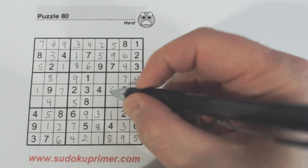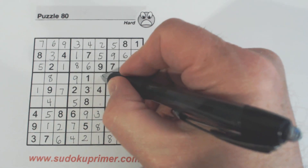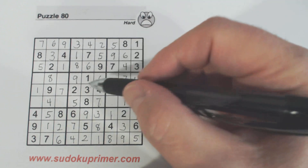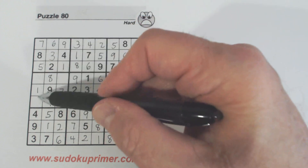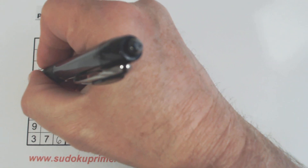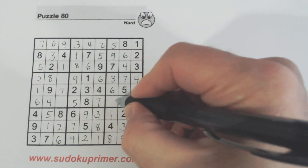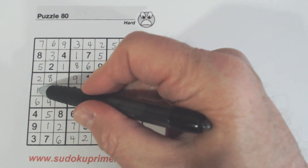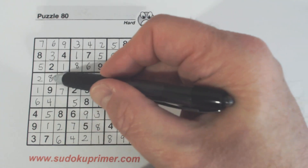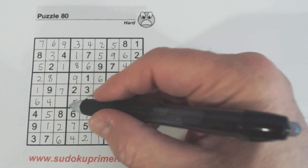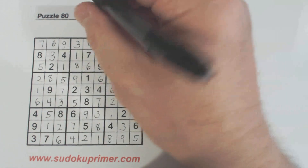We've got two-threes there and six-sevens there that we can solve. Two-six there we can solve. With our two there we can solve our two-threes here. And then one, two, three, five — three and five left there. And that's it.